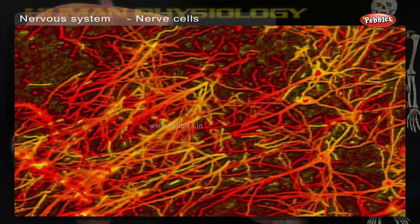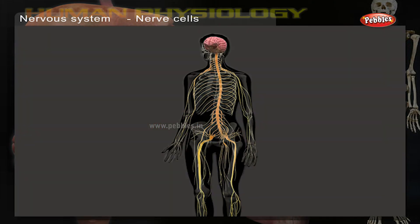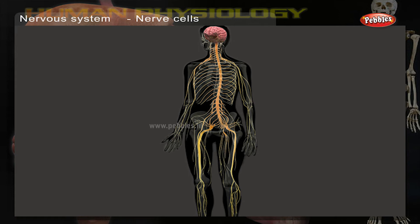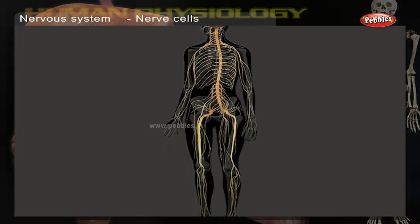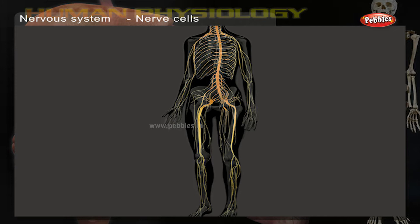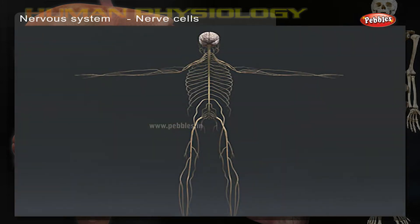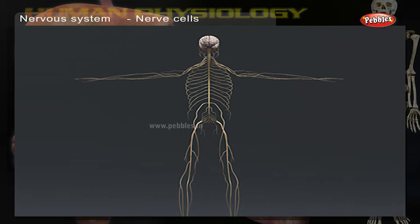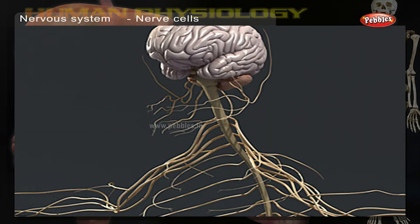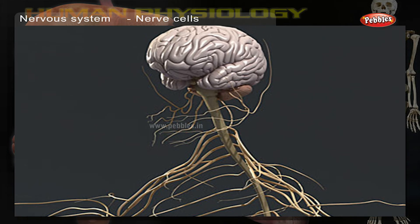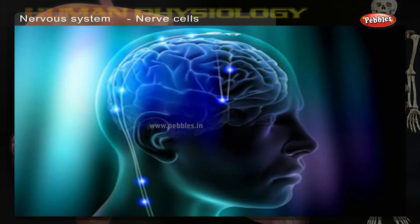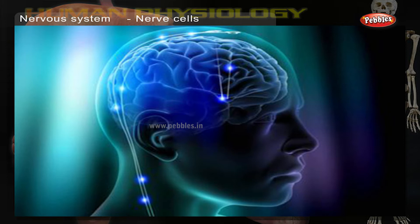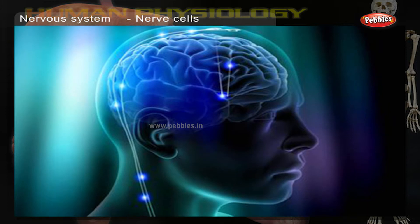The nervous system is the body's information gatherer, storage center and control system. Its overall functions are to collect information about the body's external or internal states and transfer this information to the brain, to analyze this information, and to send impulses out to initiate appropriate motor responses to meet the body's needs.